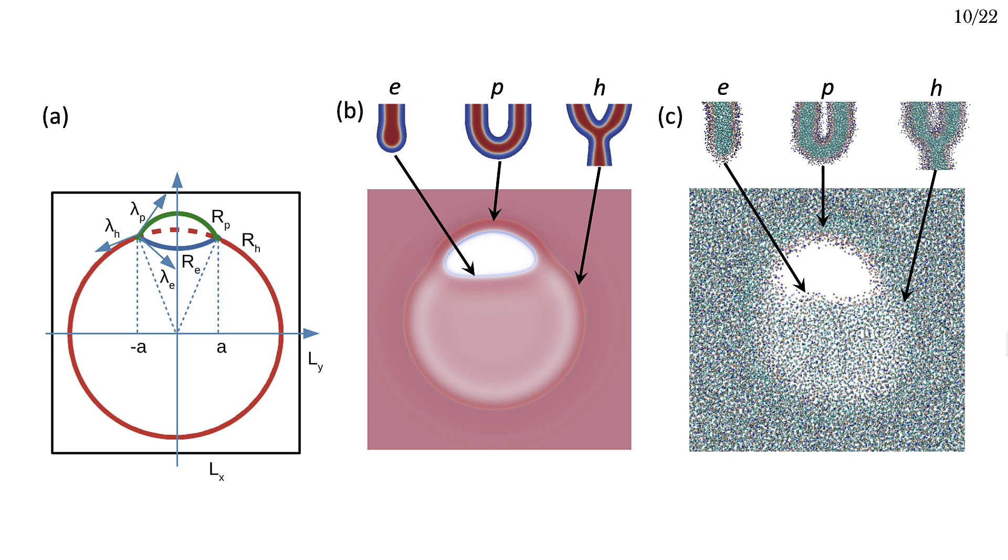Things get a bit more complicated when we want to study pores and hemifusion diaphragms. Not only do we have a complicated geometry, but we have three different types of interfaces rather than just one. An analytical treatment of pore stability becomes a lot more complicated, and it becomes very useful to use numerical models to compare with, such as SCFT and MD simulations.